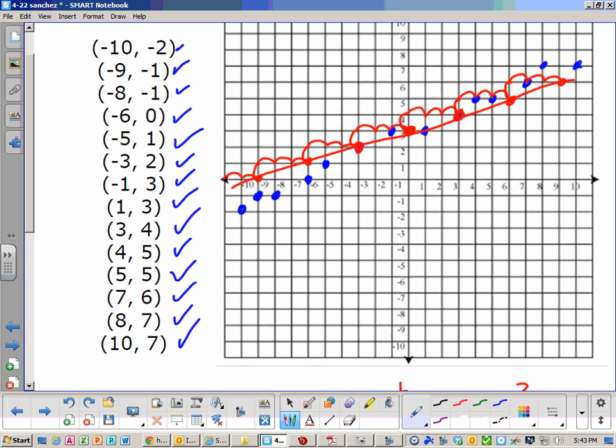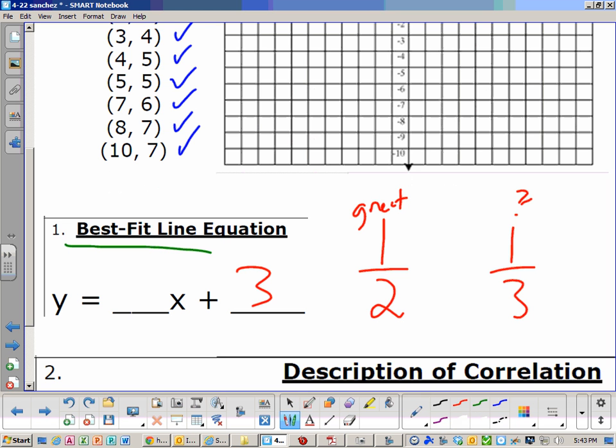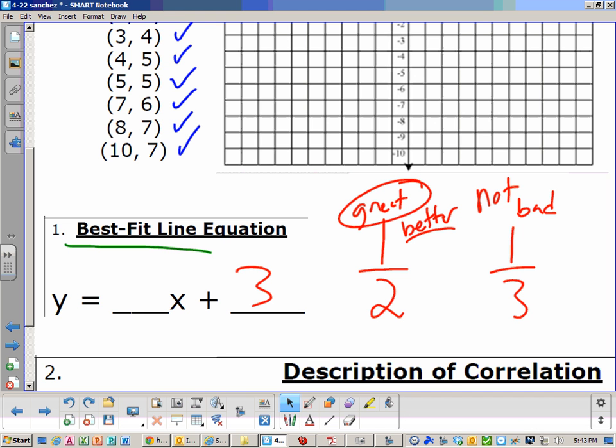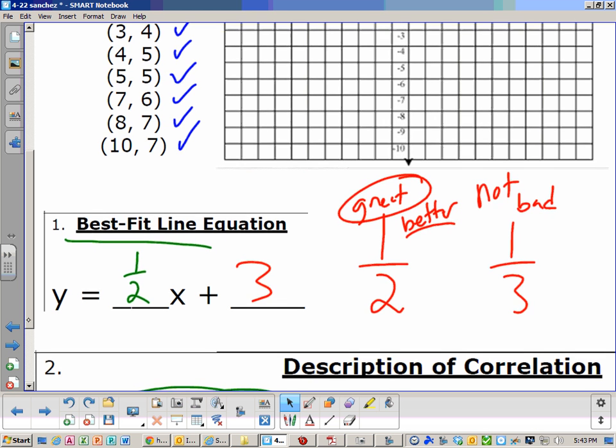You know, honestly, it's not bad, but there's better. 1 over 3 is not bad. I mean, it's not the worst case scenario, but this is better. I like 1 over 2. 1 over 2 is just like right on it. So I think 1 over 2 is going to be your answer. I gave you the line of best fit right there. So 1 over 2 is your line of best fit.